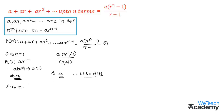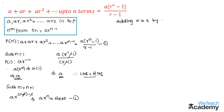Now let us substitute n equals n plus one in the nth term of the LHS of equation one. On substituting, we get a into r to the power n plus one minus one. The plus one and minus one cancel, giving a into r to the power n, and this is the next term in the expansion of equation one. Now let us add this next term to both sides of equation one.